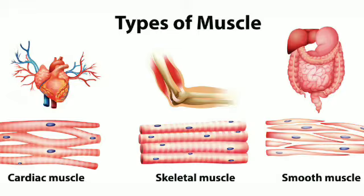Skeletal muscles are voluntary in function. The two ends of skeletal muscles are attached to two different bones. Example: muscles of the arms and legs. Heart or cardiac muscles form the heart wall and bring about continuous contraction and relaxation of the heart. This is known as beating of heart, which is involuntary. In one minute, the heart beats about 70 times.